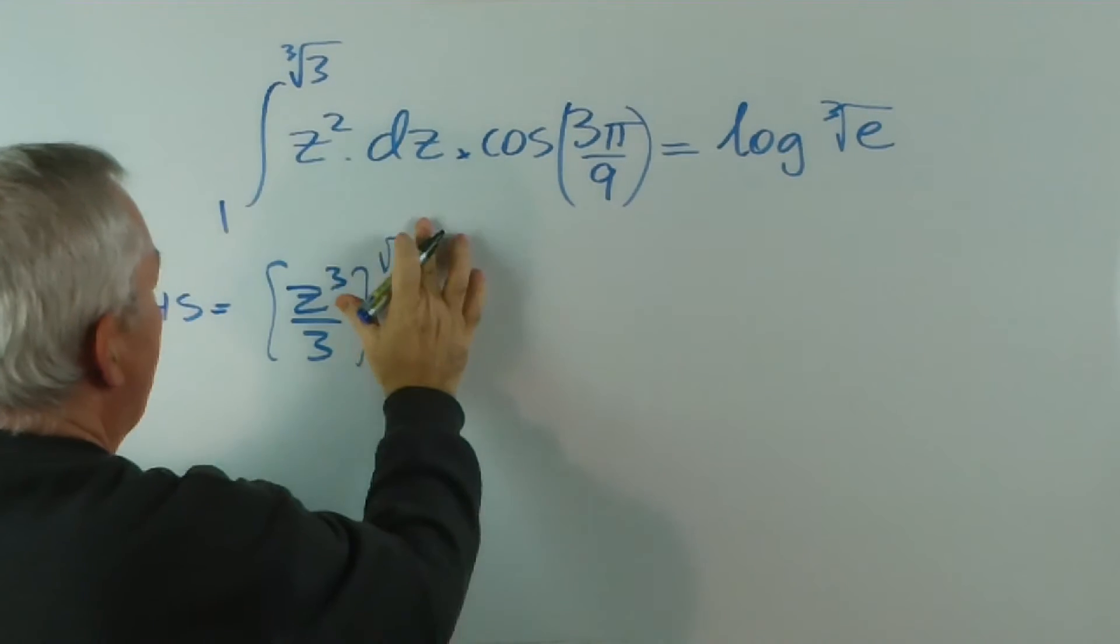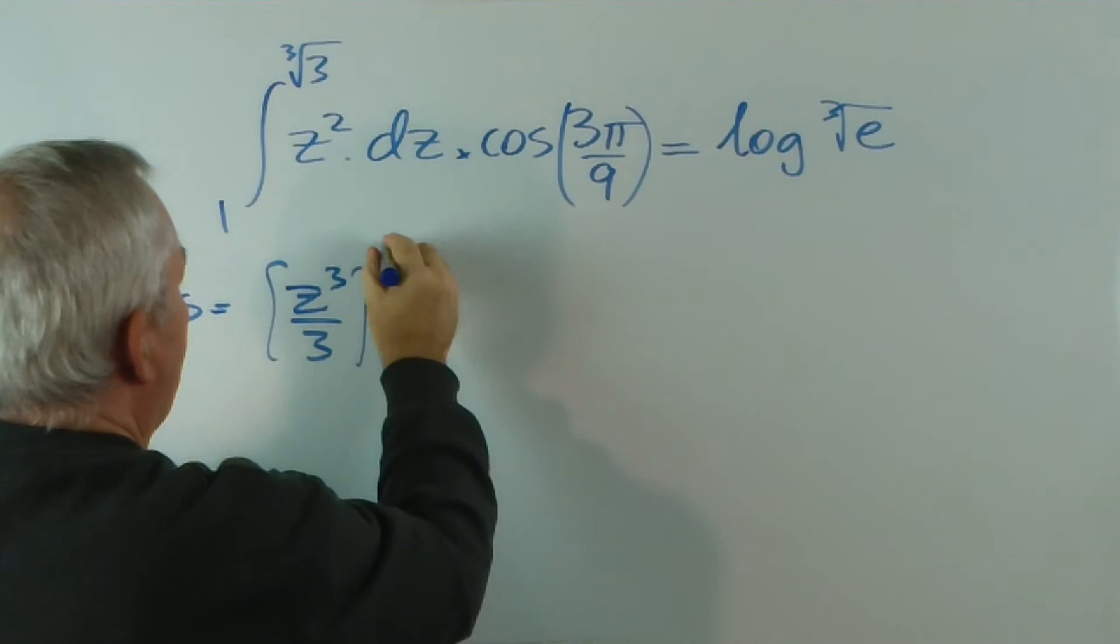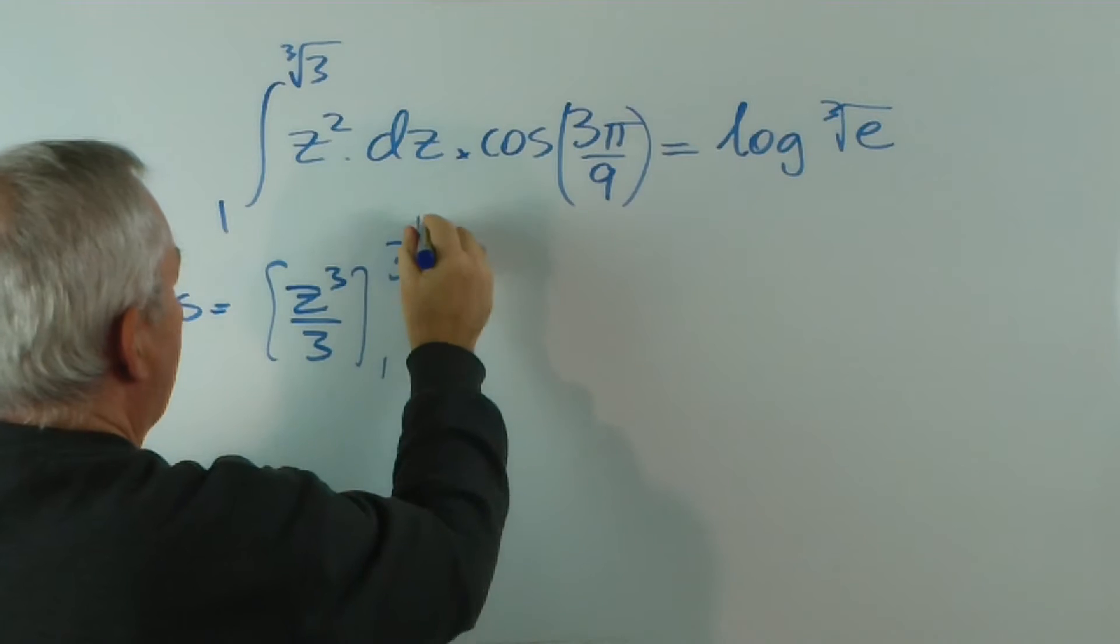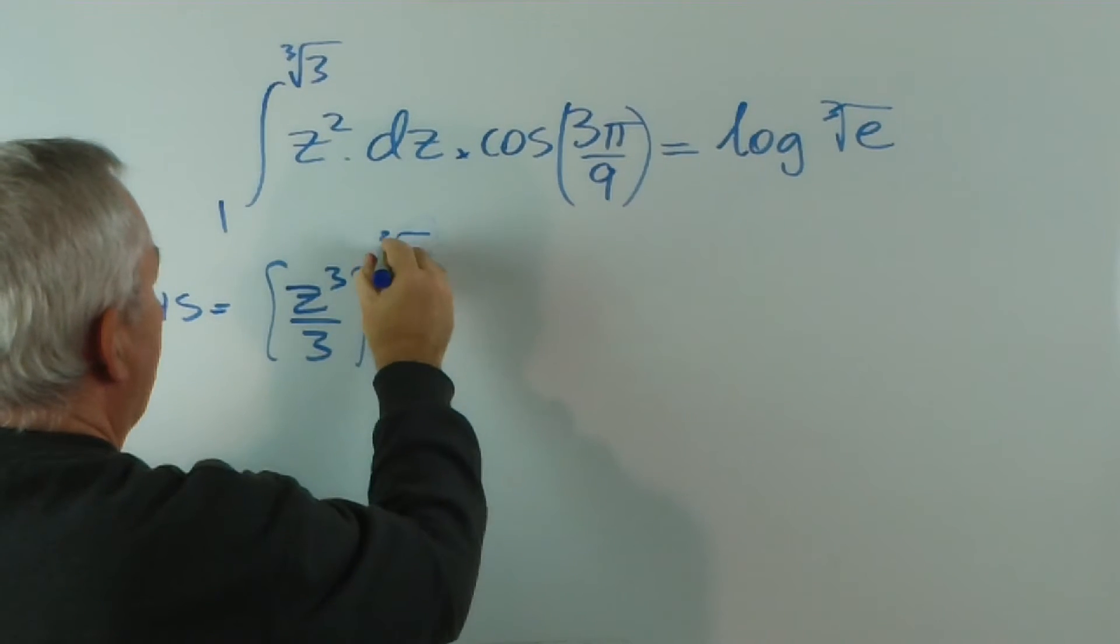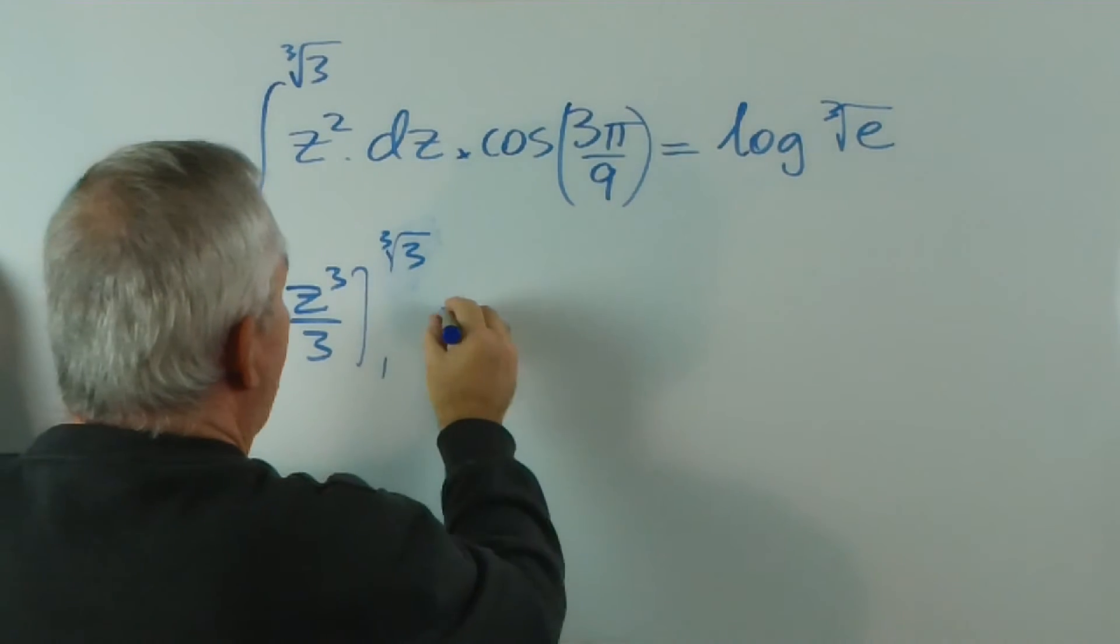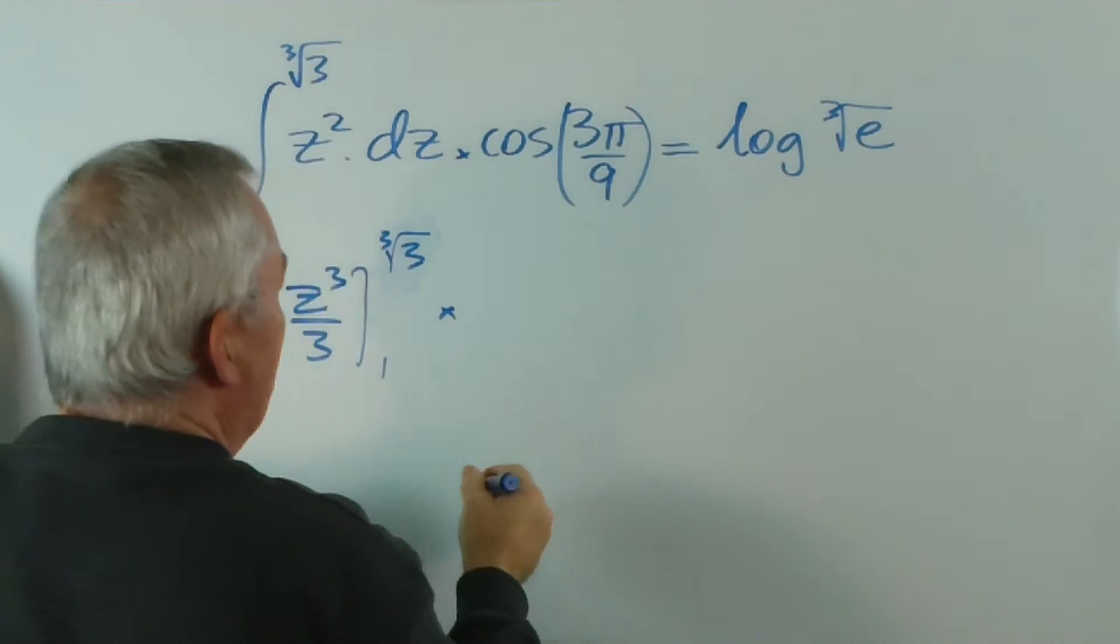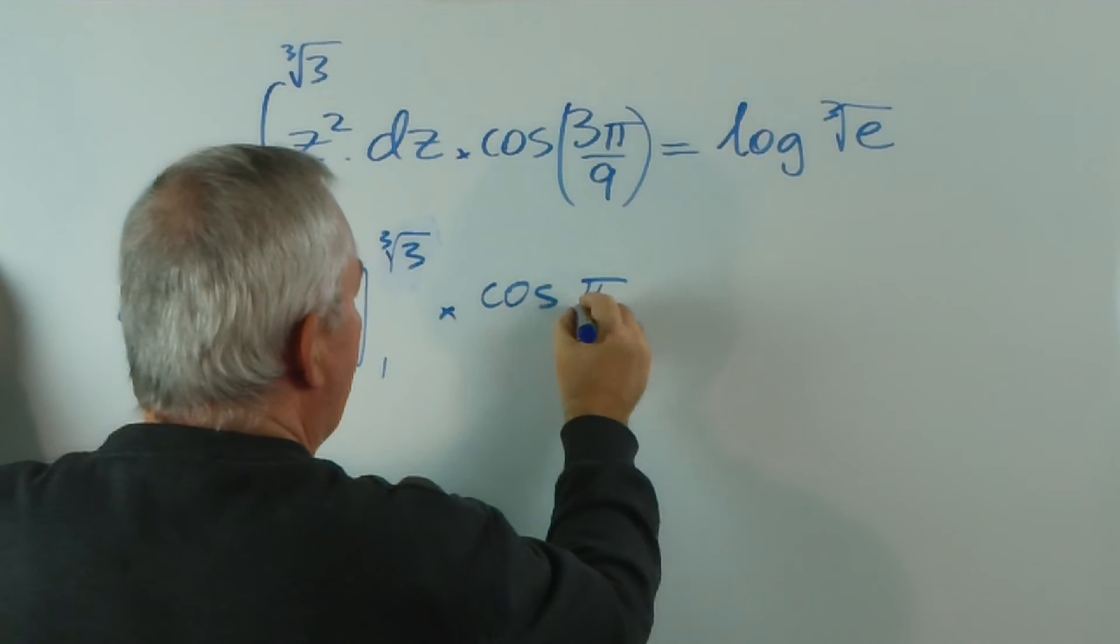Now, the cube root of 3 I'm going to write... 3 to the 1 third... actually, I don't need to... I'll leave it as a cube root of 3... times cosine of 3π on 9 is really the cosine of π on 3.